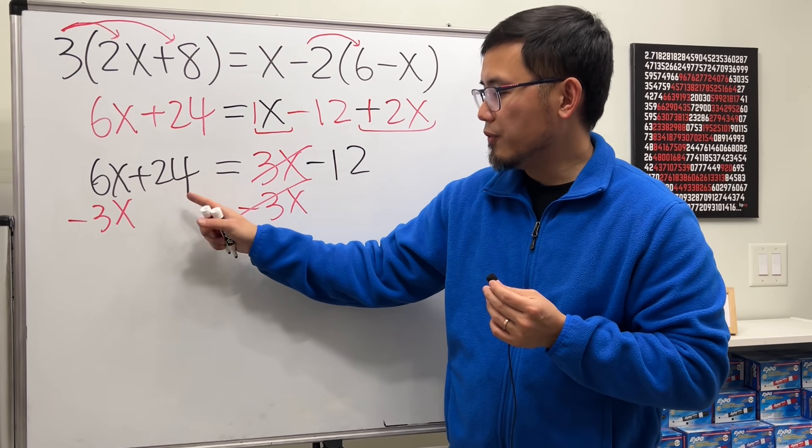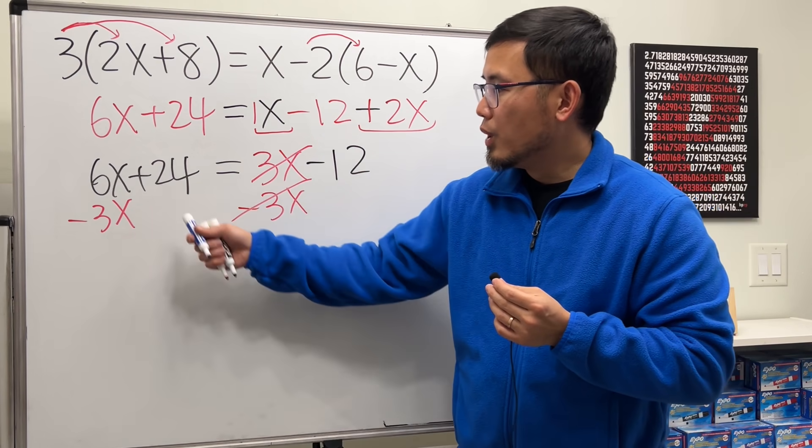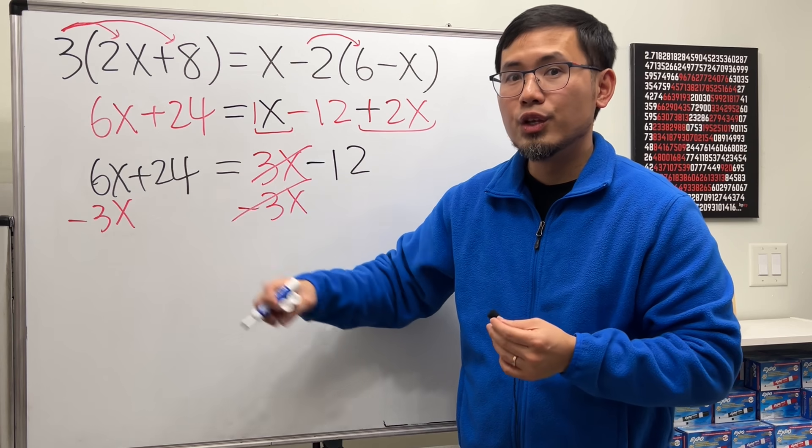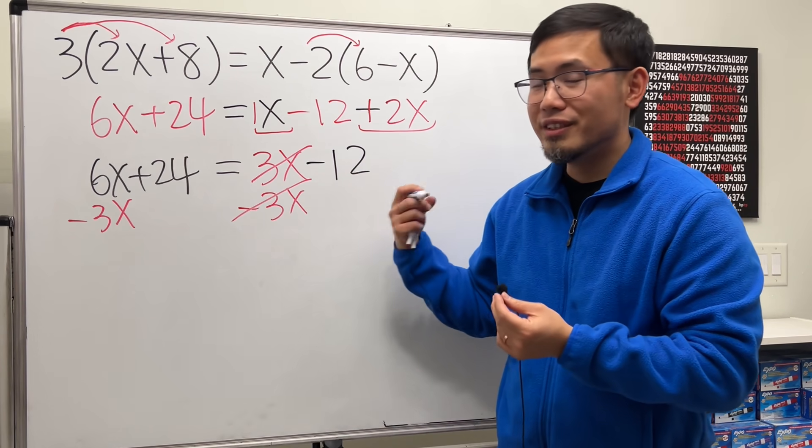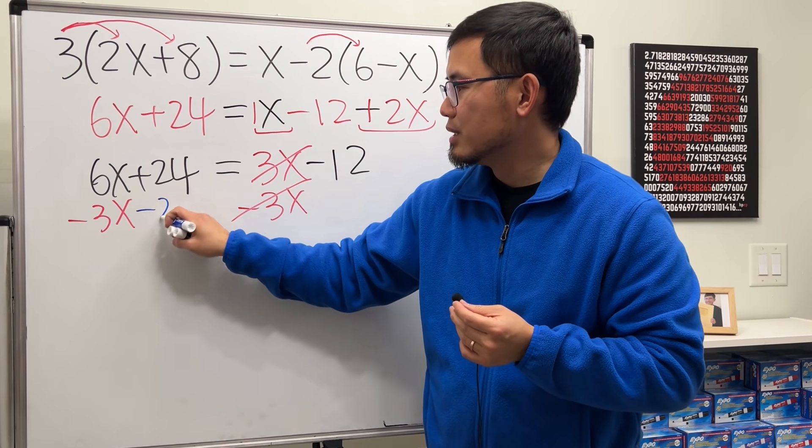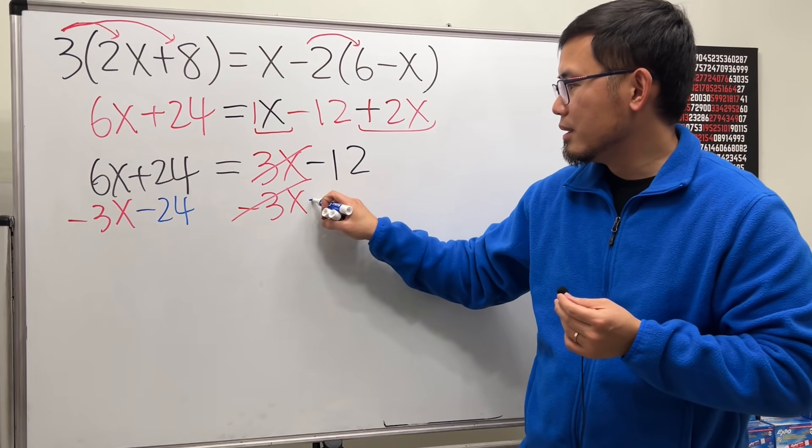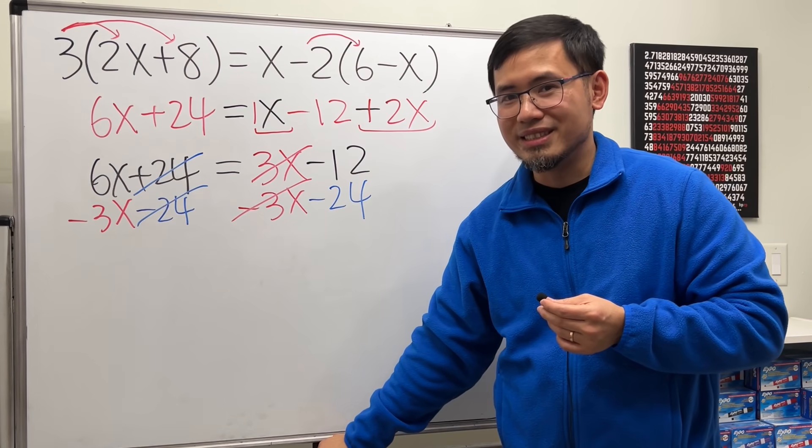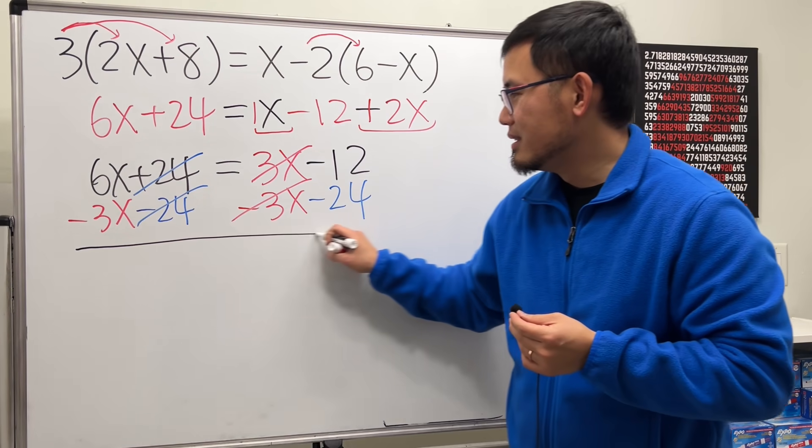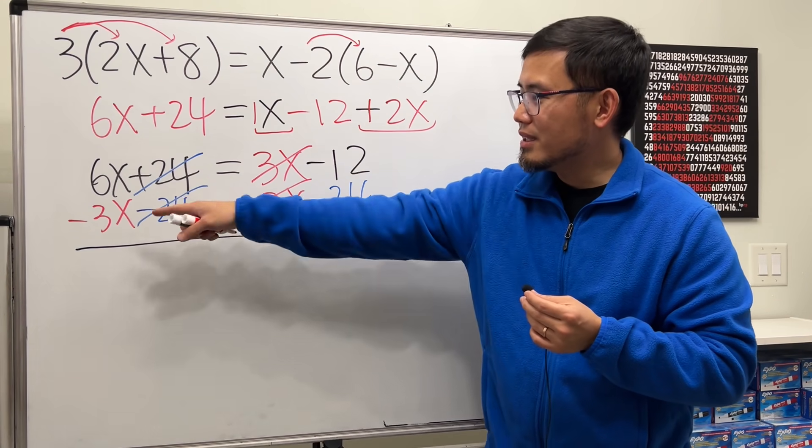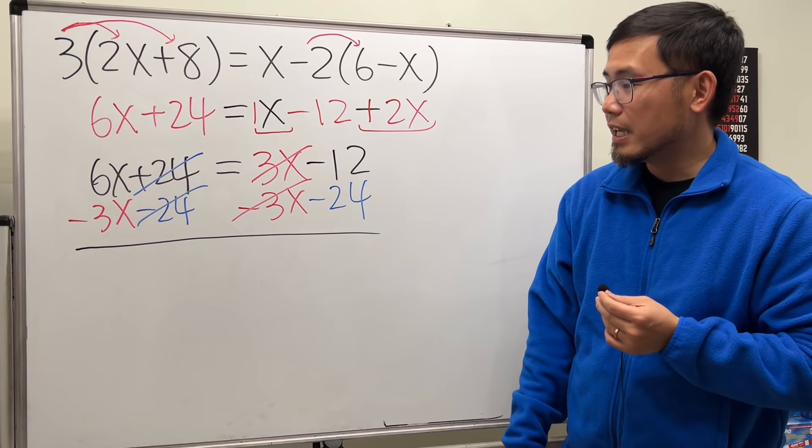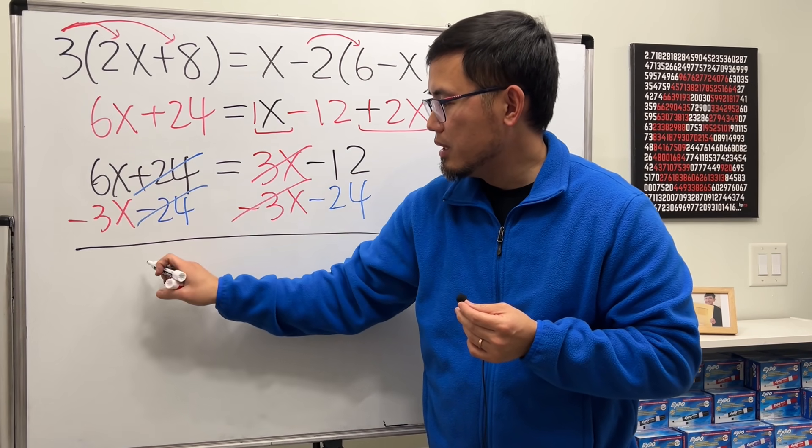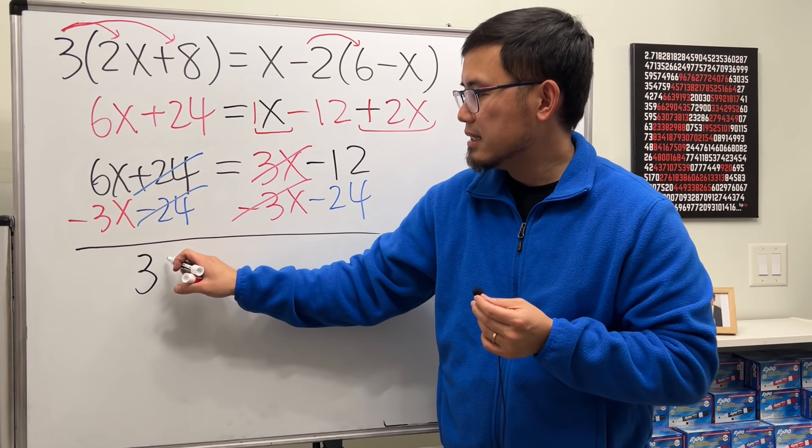But here we have plus 24. So this is what we are going to do. We want to bring the number to the other side. This is plus 24. You want to do the opposite when you are moving things around. So we are going to subtract 24. Subtract 24. This and that cancel out. So you can just do it like this. So that will save you like one step. And then you will get to 6x minus 3x. That will be 3 because 6 minus 3 is 3. And then that's the x term.